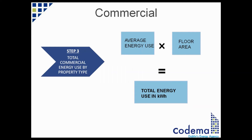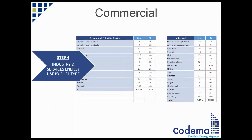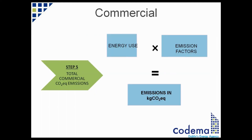The third step results in the total energy use in kilowatt hours, obtained by multiplying the average energy use by floor area. Industry and services energy use aren't broken down by fuel type in CIBSE, so to find the energy use for both sectors the national energy use breakdown is used. To find the total emissions in kilograms of CO2, the energy use is multiplied by the emission factor, which results in CO2 emissions.